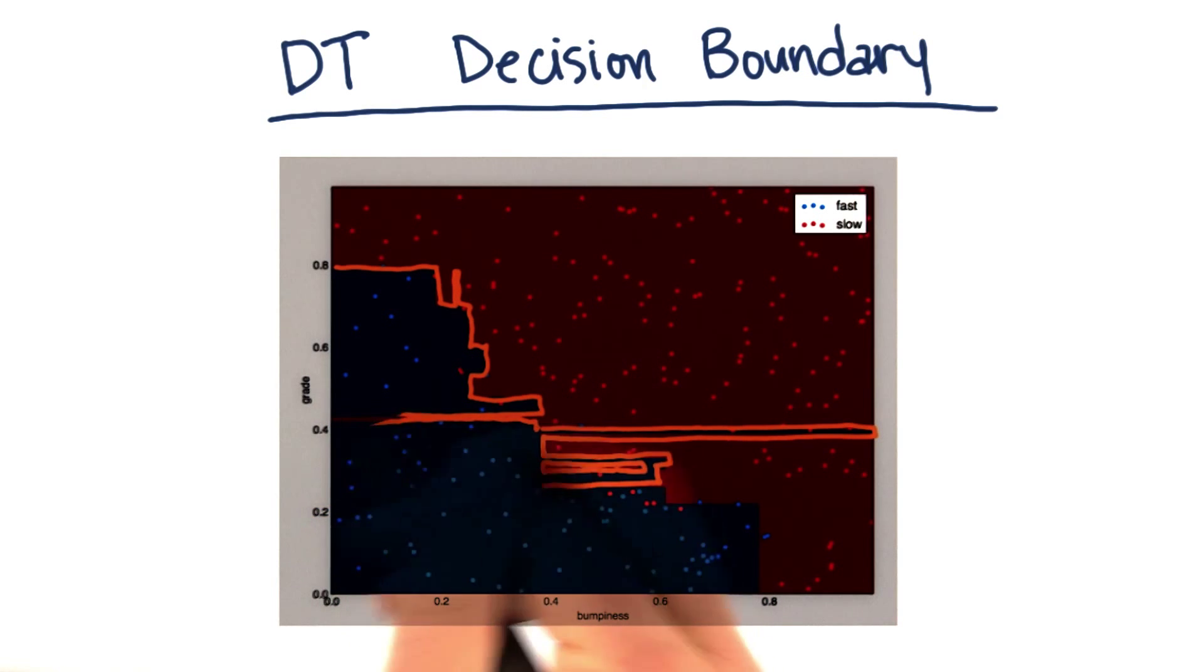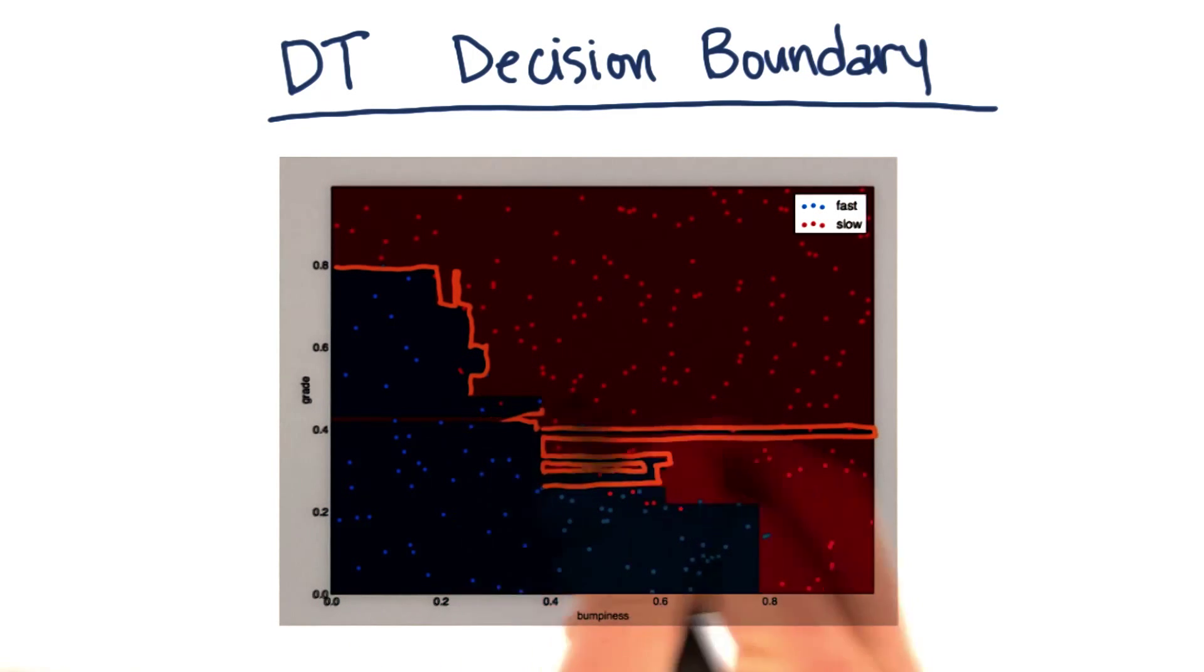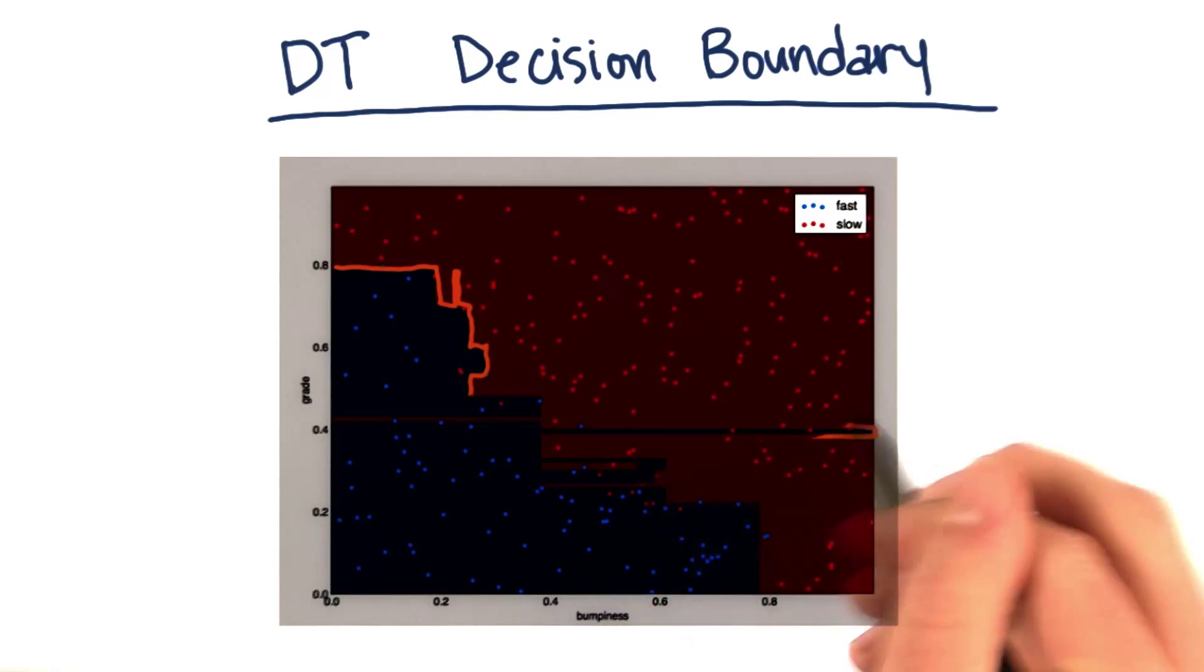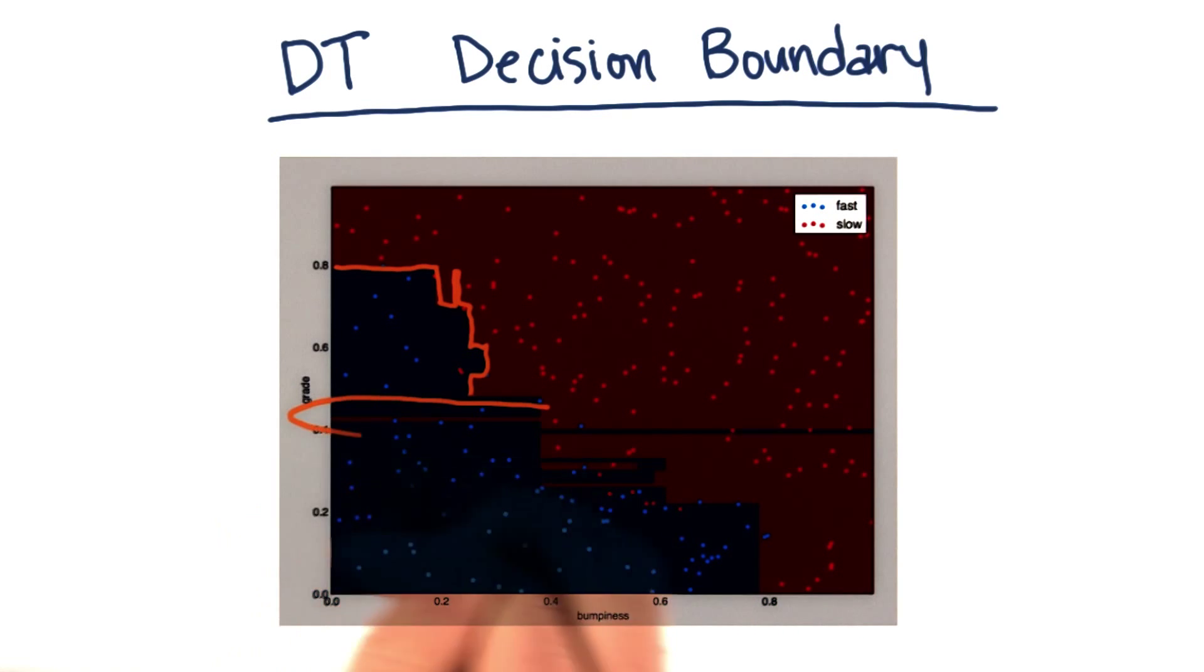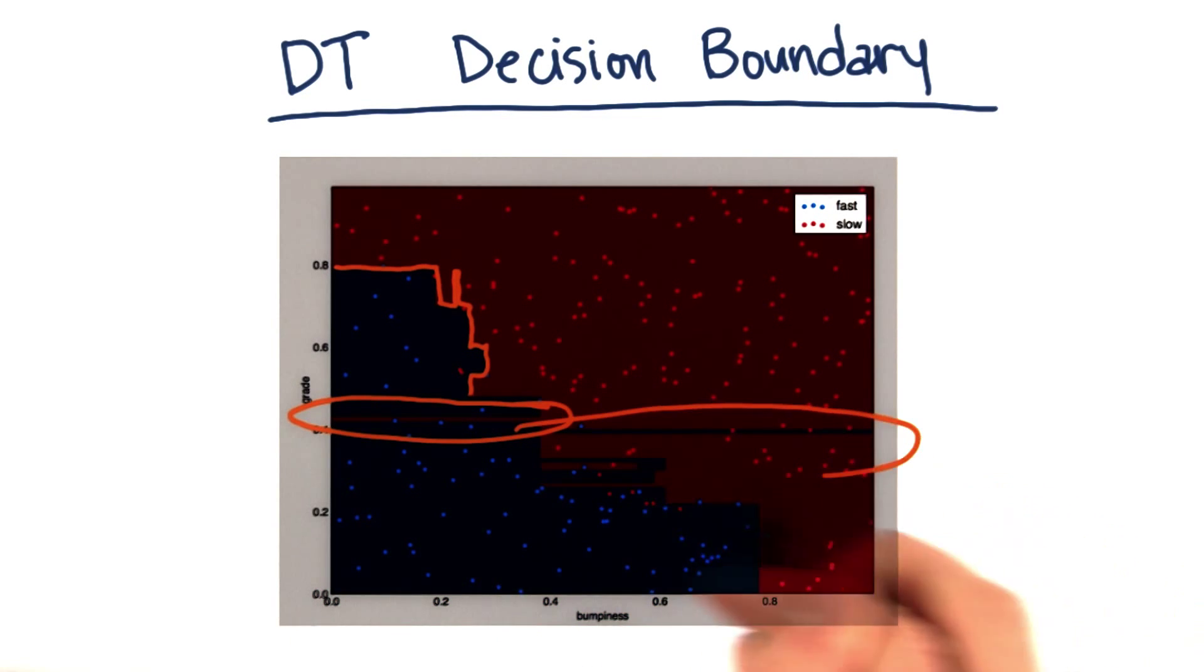One of the things you might be noticing is that there's some signs of overfitting, perhaps, in this decision tree. We have these long slices, like this one here and this one here, where the decision tree seems to be kind of going out of its way in an unnatural way.